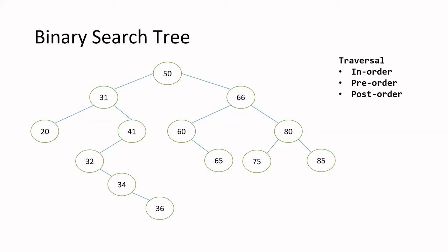There are three types of traversal: in-order, pre-order, and post-order. When thinking about the definition of these, there's no need to memorize anything. Just think of three nodes of a BST. The BST is featured by a specific order, even with just three nodes having a parent, left child, and right child relationship.